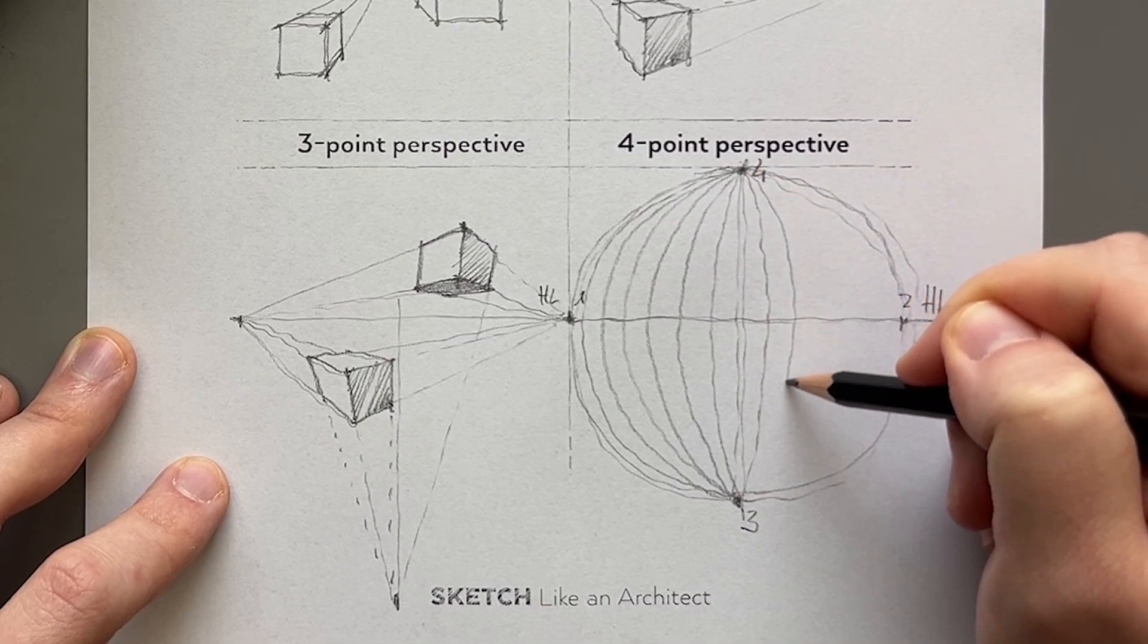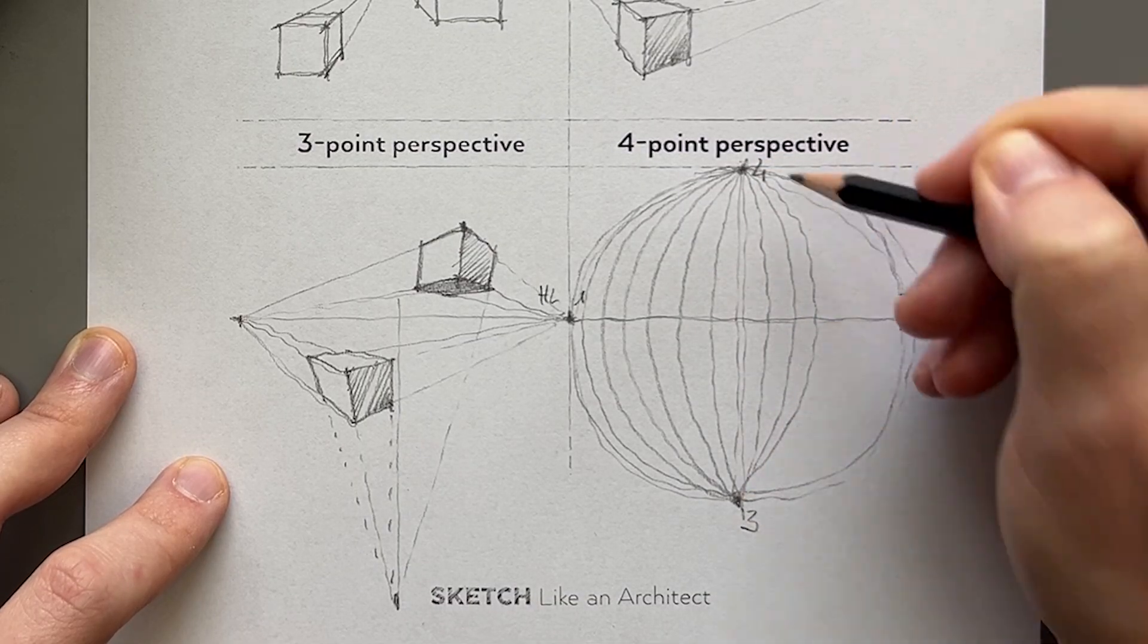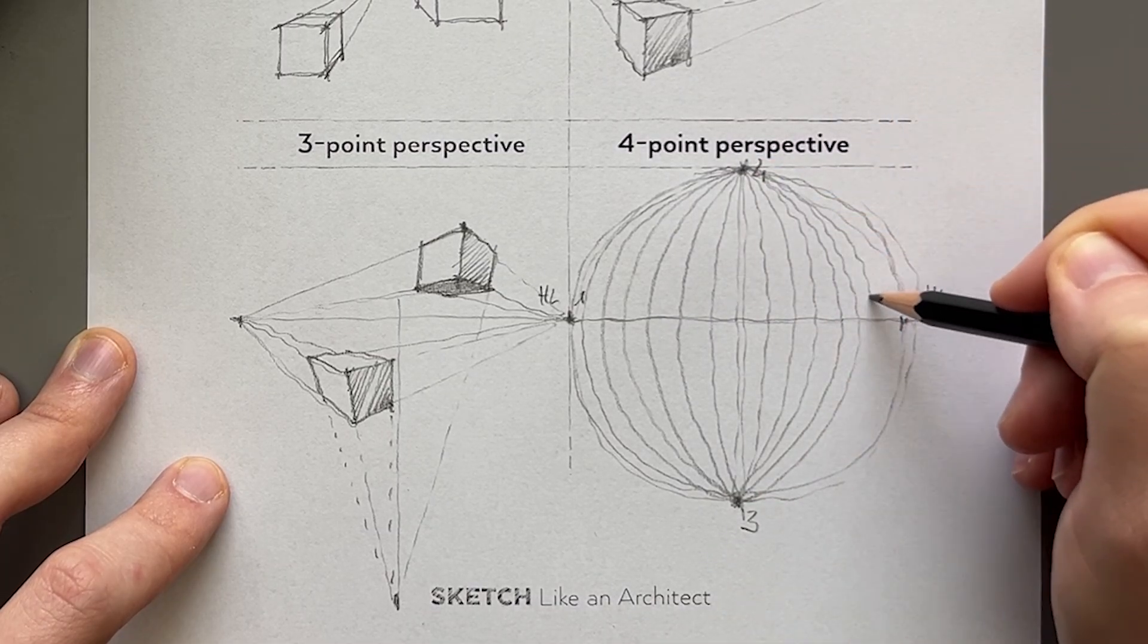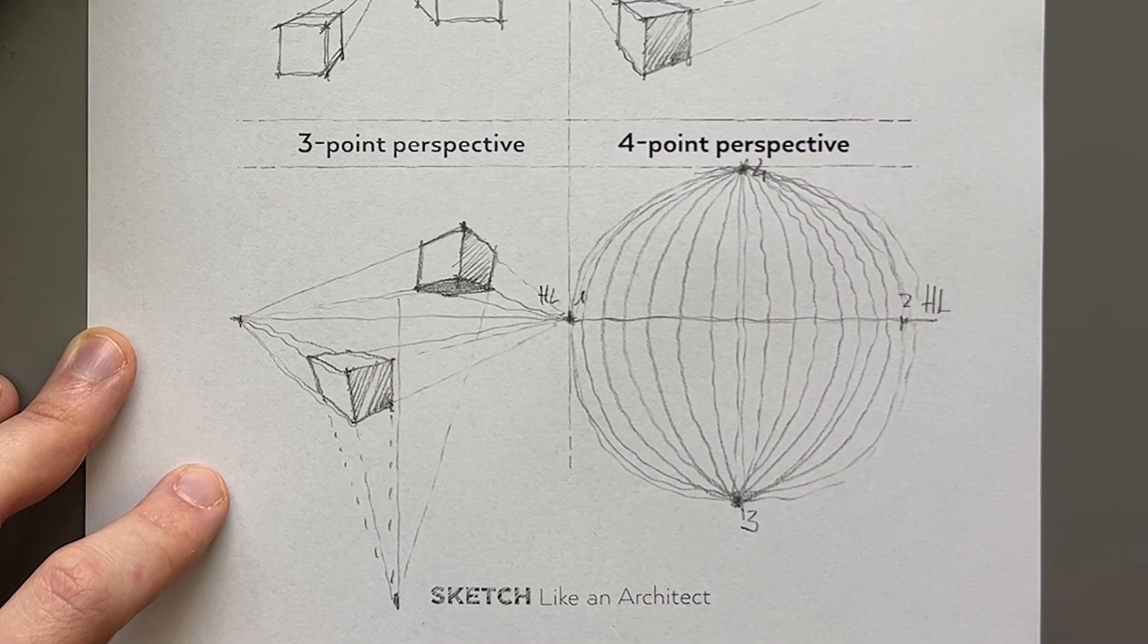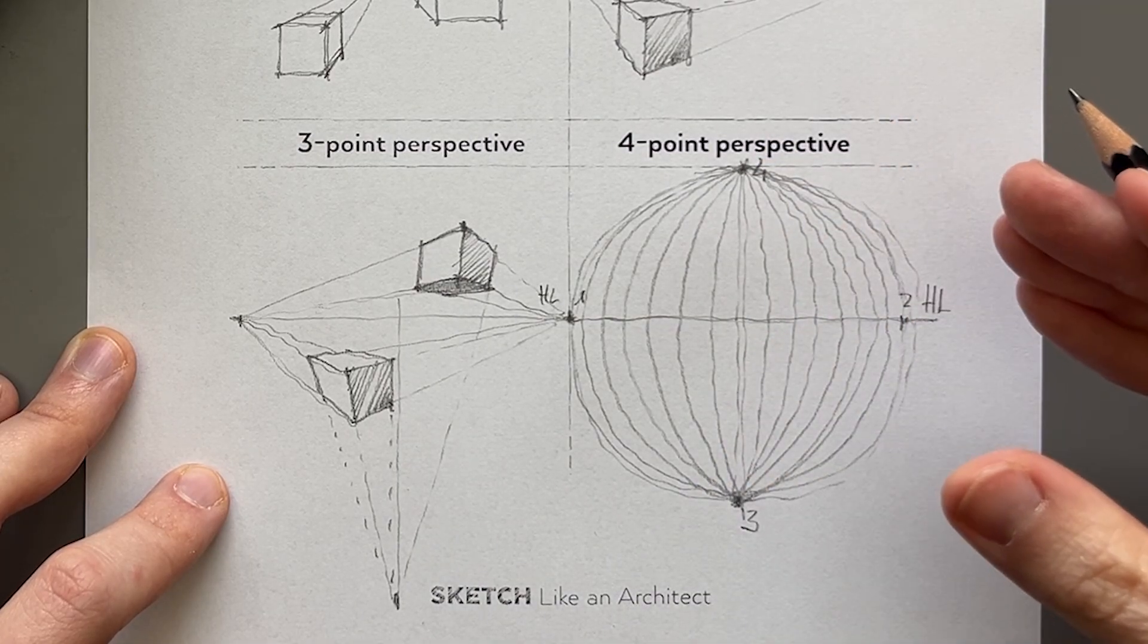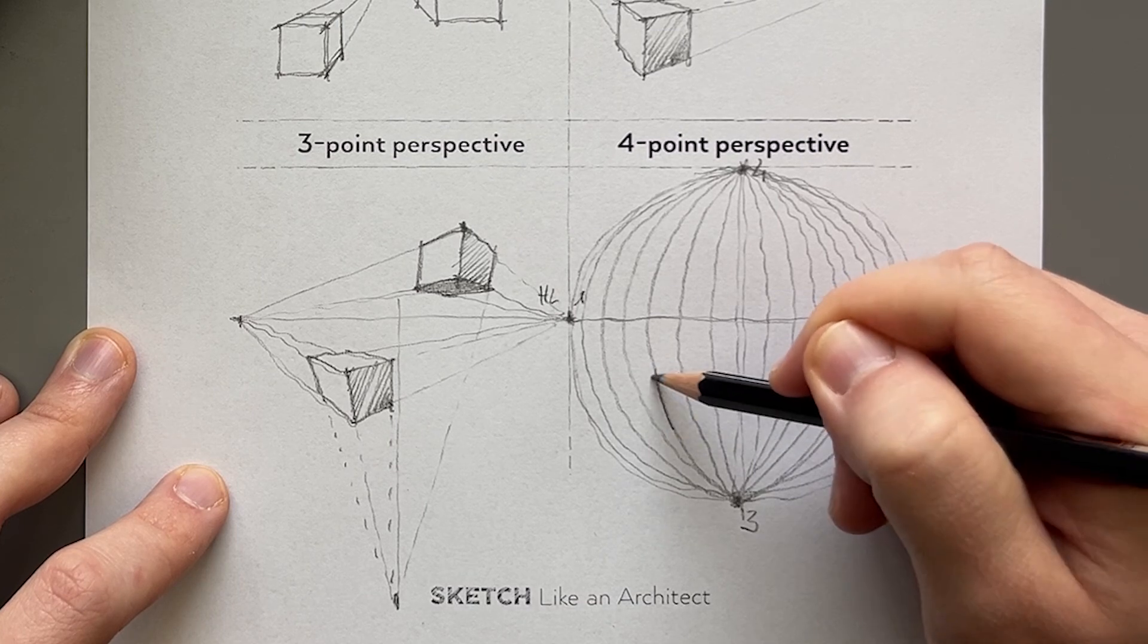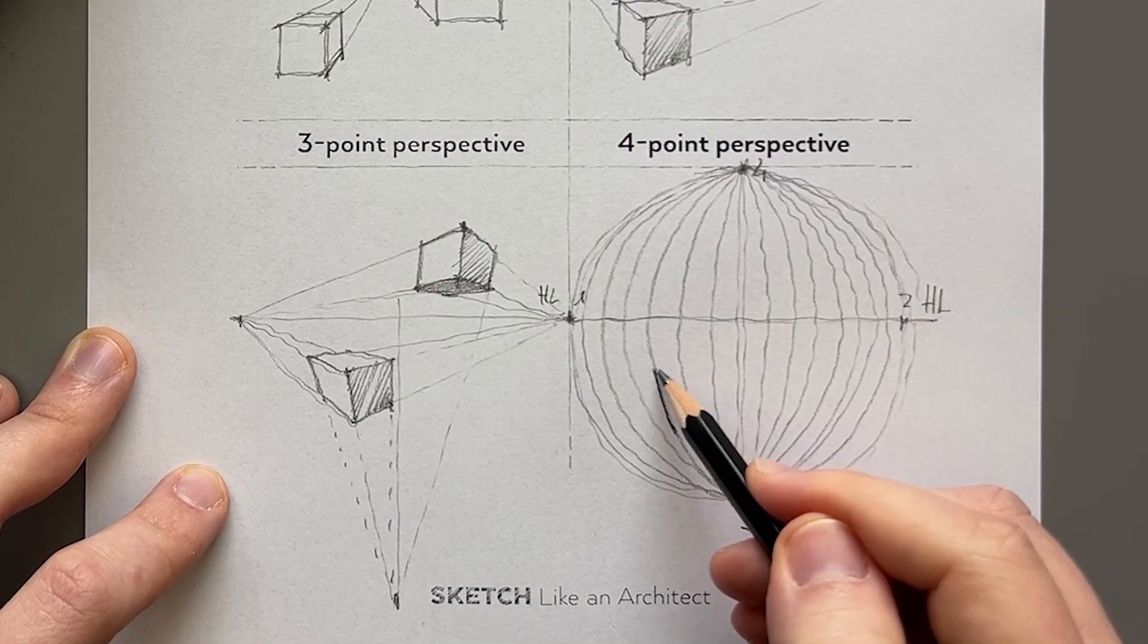So it's mimicking more of a fisheye effect. It's not as commonly used in architectural sketching, but it's great for comics or any type of visual that requires a little more dynamic view. So we have something like this. Now if I want to draw a box in here, I would just follow, for the start, one of the curved ones for the front edge.